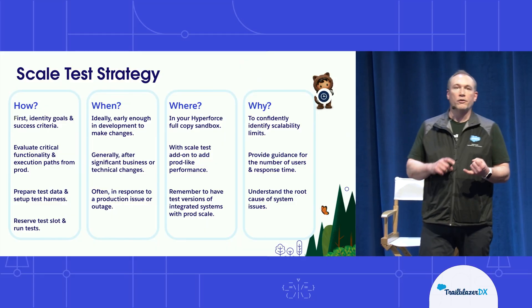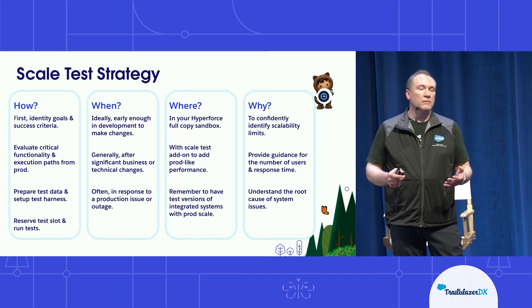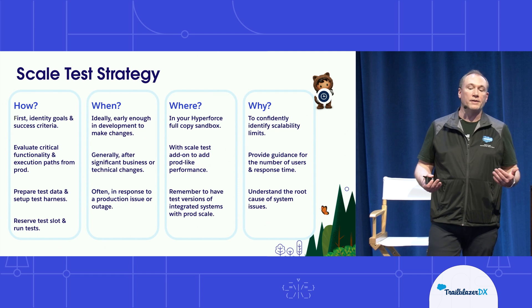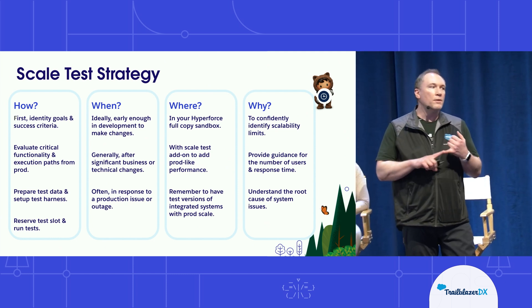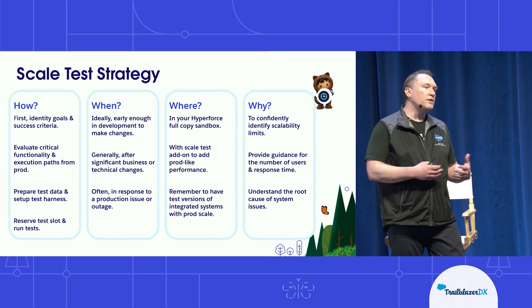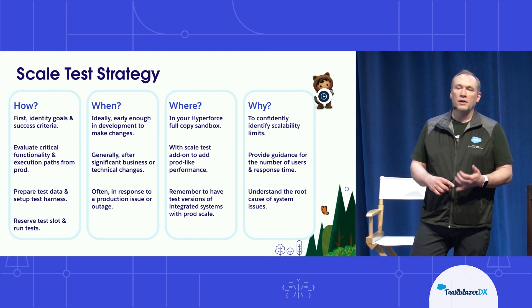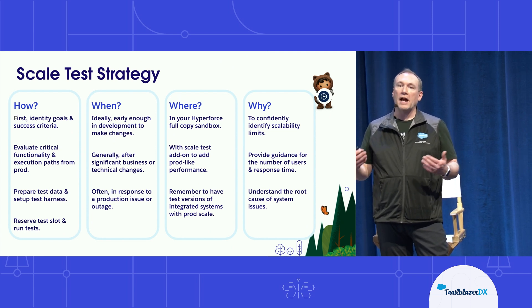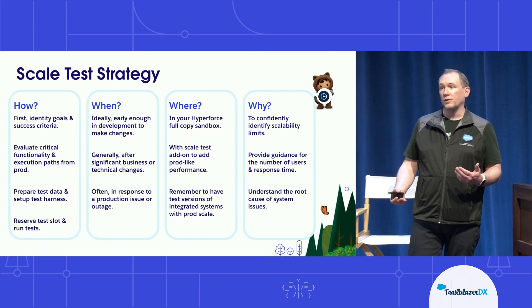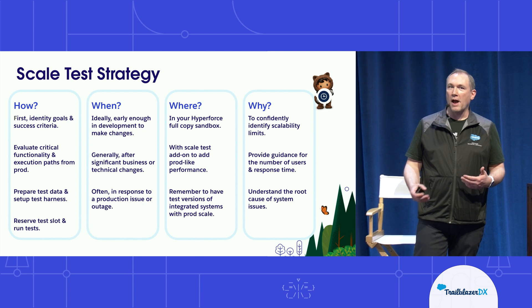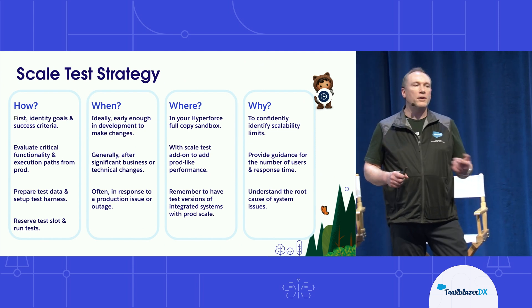To do that, we work on a test plan. That test strategy and test plan is pulled from Well-Architected and includes the how, the when, the where, and the why. This is a shared responsibility — there are things Salesforce does for us, but also things we as customers are responsible for to make the scale test successful. Starting with the how: the most important question is, what are your goals? What are your success criteria? What does good look like in your scale test? You're not going to apply scale test to everything in your org — focus on critical business functionality and those execution paths. We go in with assumptions as architects, but as you saw in the demo, those may not be right; we can see code paths executing frequently that are slow, which may differ from our assumptions. Next, prepare your test data and test harness — currently that's our responsibility, but as you saw in the roadmap, that will be shared later. Then reserve your test slot and run your tests.